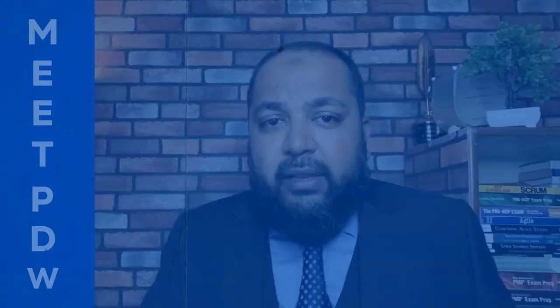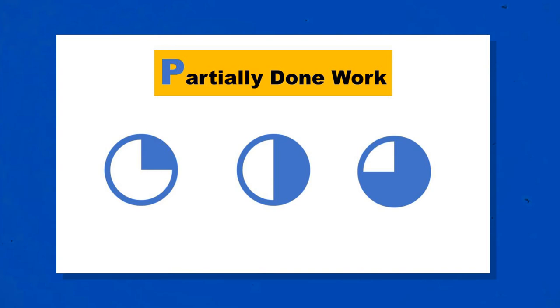The fifth one is partially done work. Nobody is going to accept it. Development is done but QA is not done. QA is done but UAT is not done. UAT is done but production checks are not done. Code review is not done. All of these are partially done work. The final work is what the customer gets. A half requirement — that's an even bigger waste. Partially done work is also a lean waste.